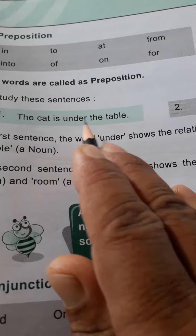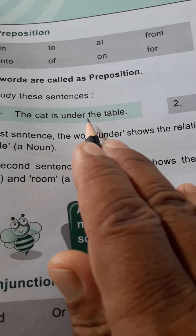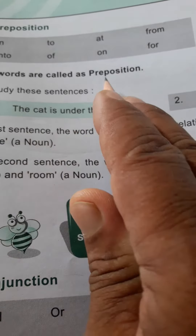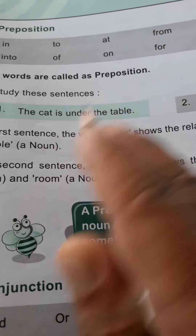And has been used before the noun table. So it is called as preposition.